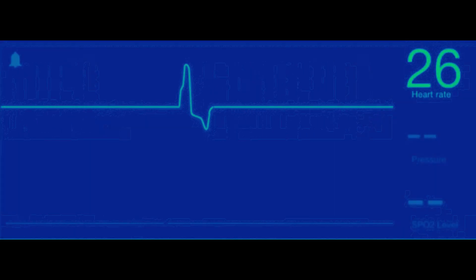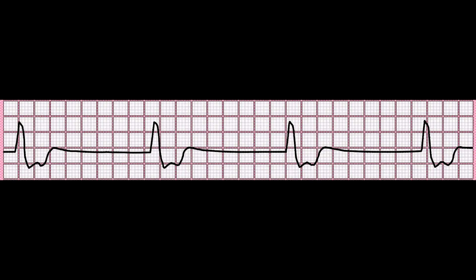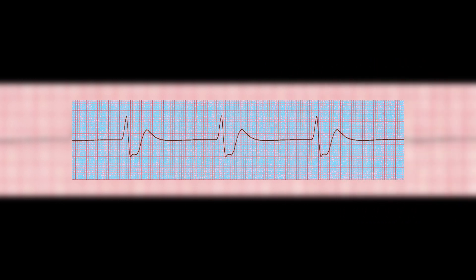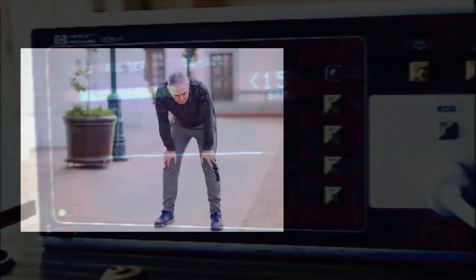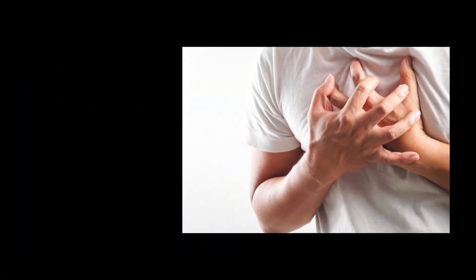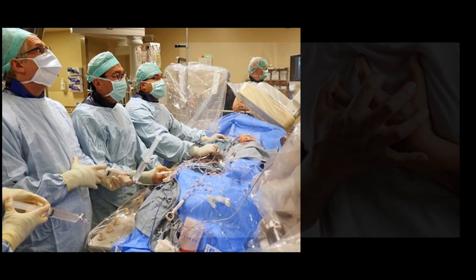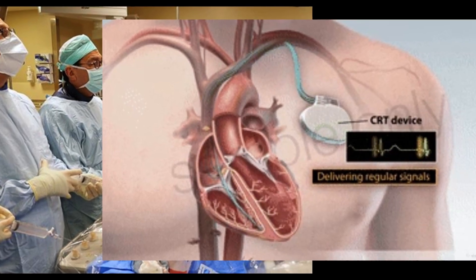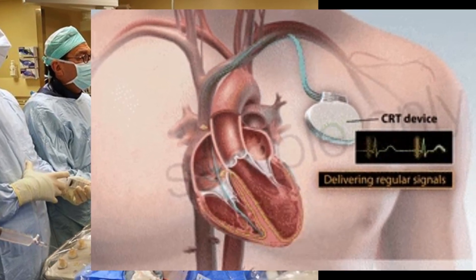In conclusion, idioventricular rhythm is an abnormal, slow heart rhythm that can be identified on an EKG by the presence of a wide and bizarre QRS complex with an absent or dissociated P-wave. It is important to recognize this rhythm as it may be a sign of a serious underlying medical condition. In severe cases, a temporary or permanent pacemaker may be necessary to regulate the heart's rhythm. Thank you for watching and stay healthy!